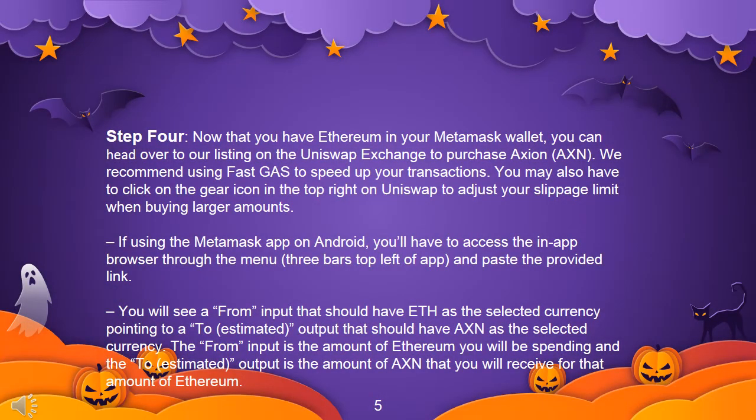Step 4: Now that you have Ethereum in your Metamask wallet, head over to our listing on the Uniswap exchange to purchase Axion. We recommend using FastGas to speed up your transactions. You may also need to click the gear icon in the top right on Uniswap to adjust your slippage limit when buying larger amounts. If using the Metamask app on Android, access the in-app browser through the menu and paste the provided link. You will see a 'from' input with ETH and a 'to' output with AXN — enter the amount of Ethereum you wish to spend and receive the corresponding AXN.